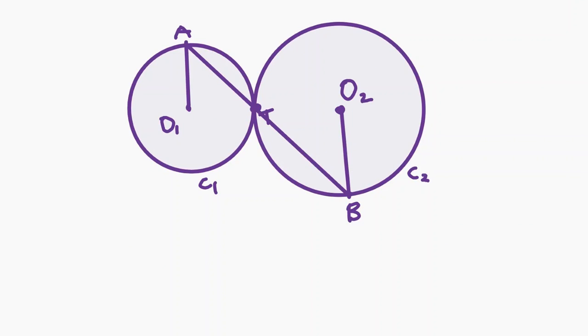One thing we notice is that T seems like the center of a homothety that takes circles C sub 1 to C sub 2. In fact, this is true. The intersection of internal tangents of two circles is a center of homothety, and the same goes for the intersection of external tangents of two circles.